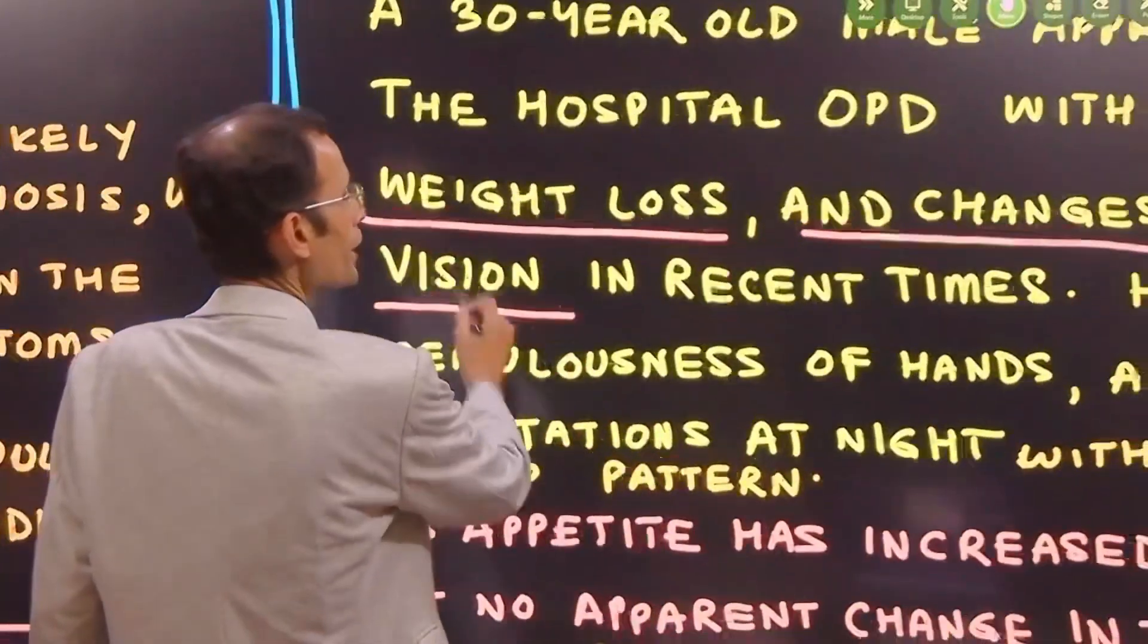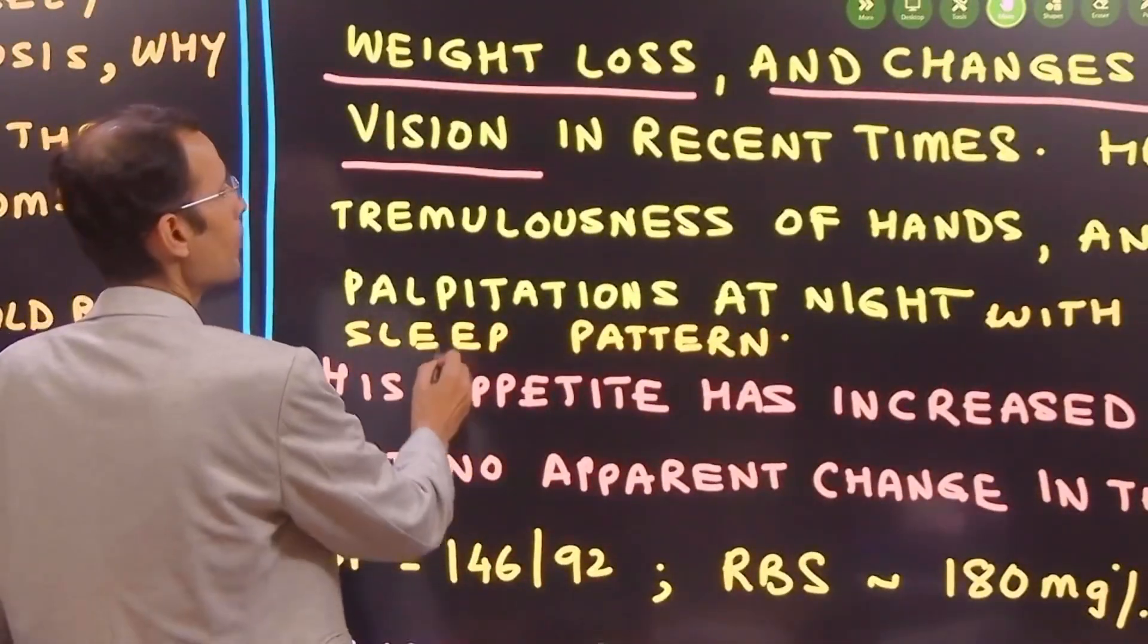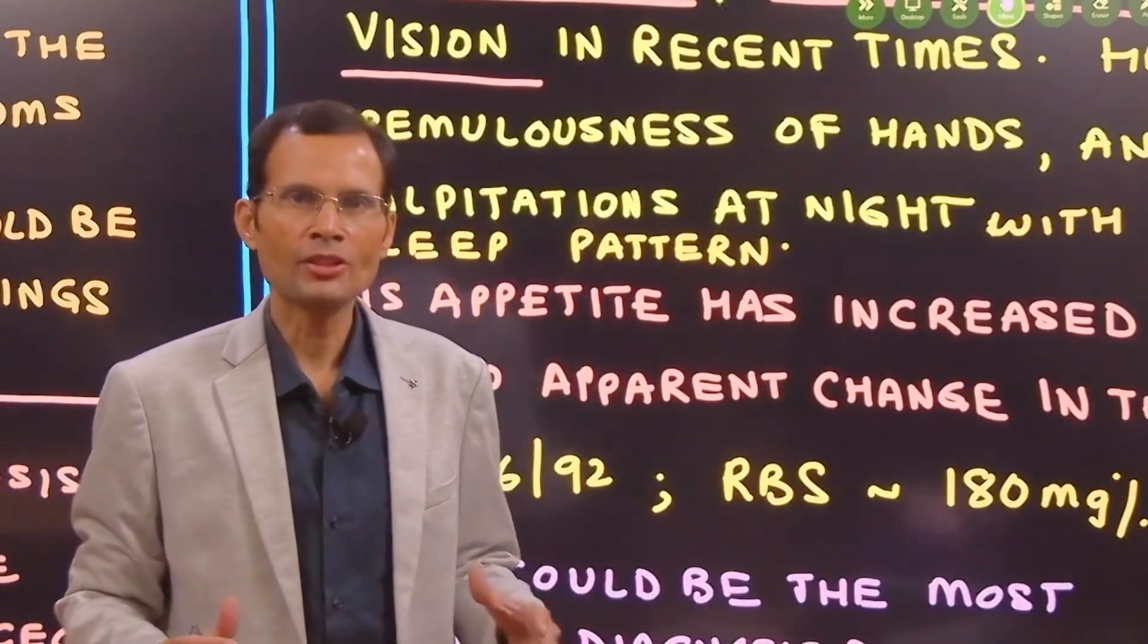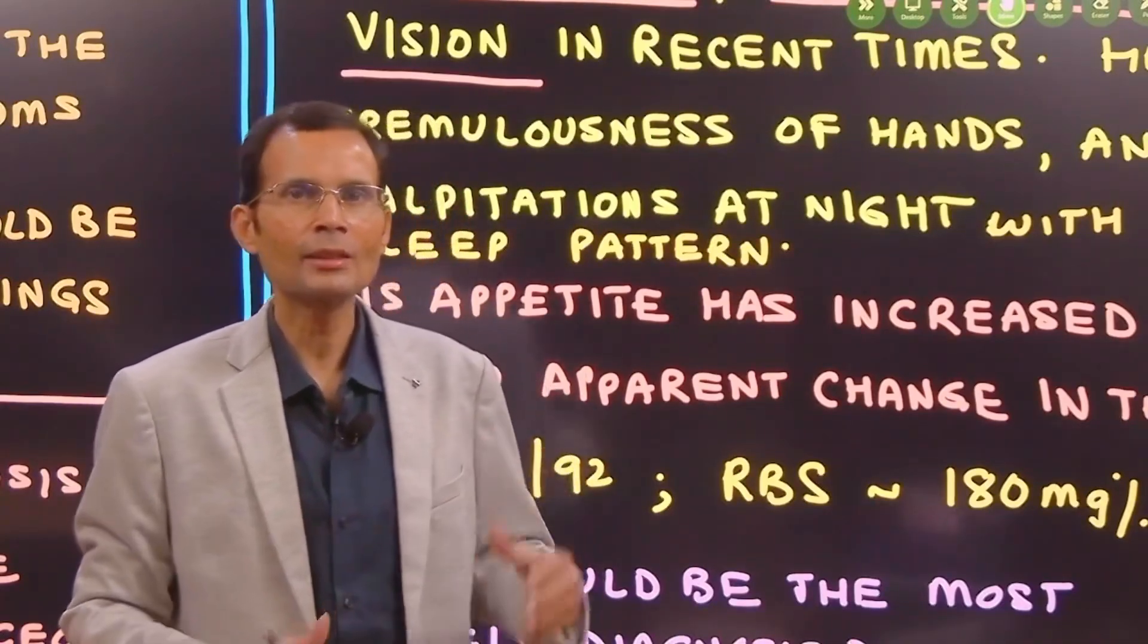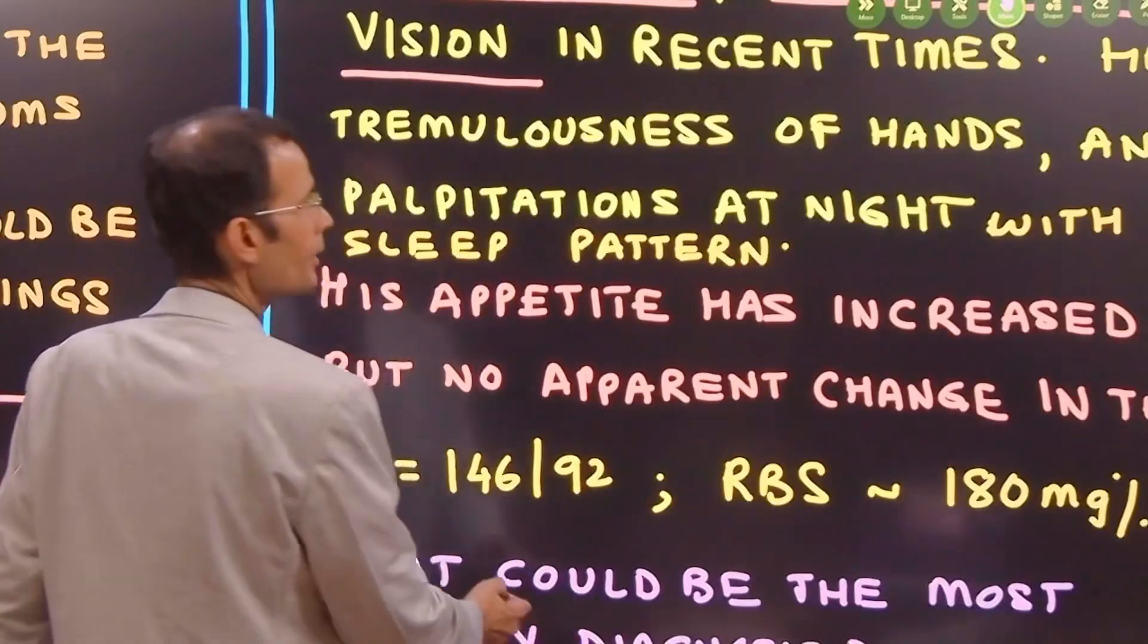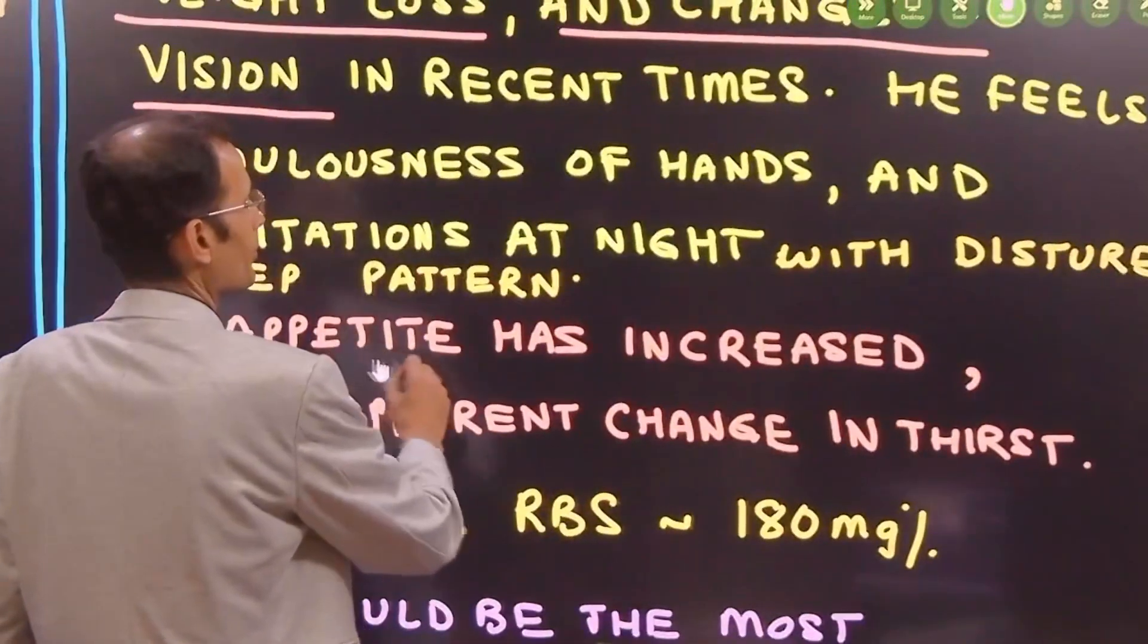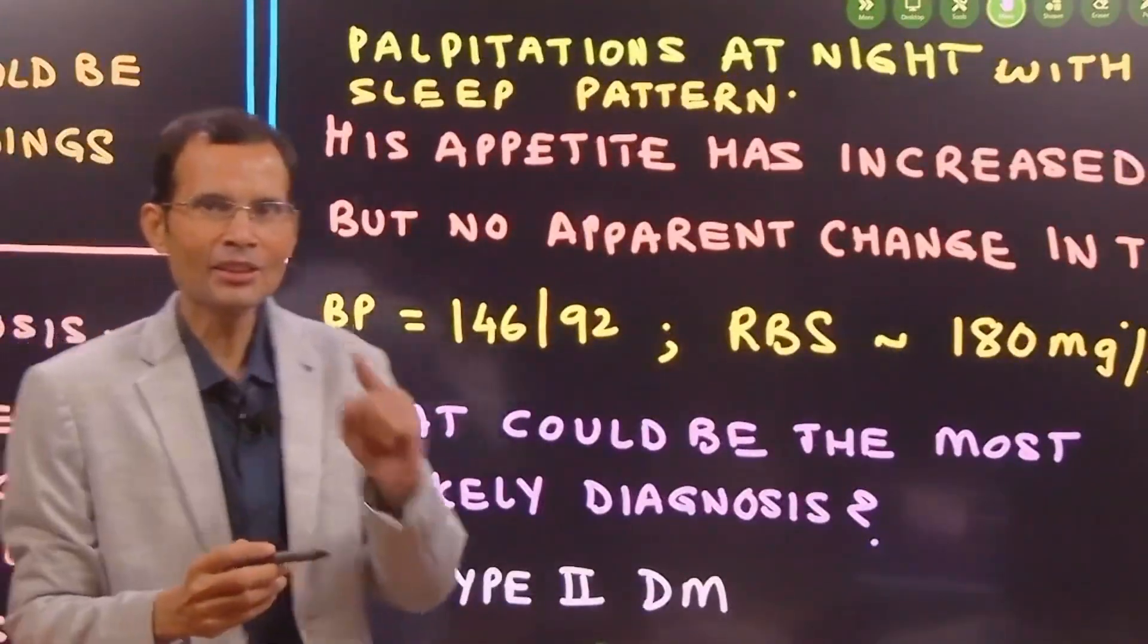Now he feels tremulousness of the hands and palpitations at night. Tremulousness of the hands and palpitations at night. This is indicative of some kind of an increased sympathetic drive. But let's see what other symptoms are. With disturbed sleep pattern, his appetite has increased.